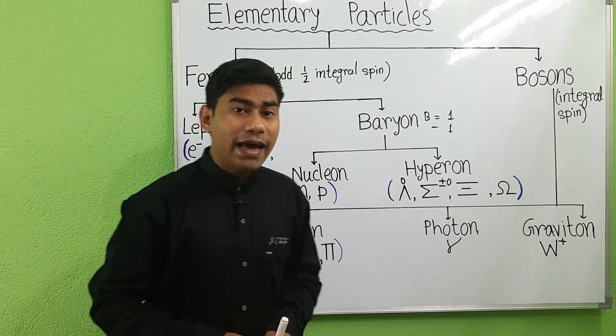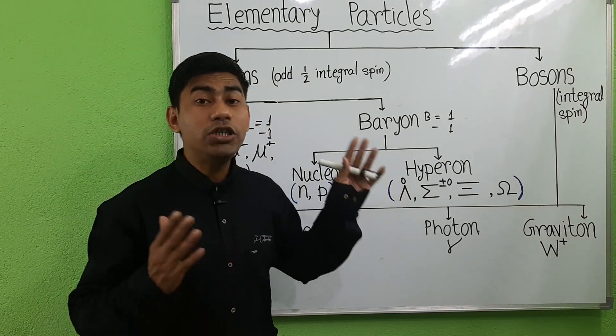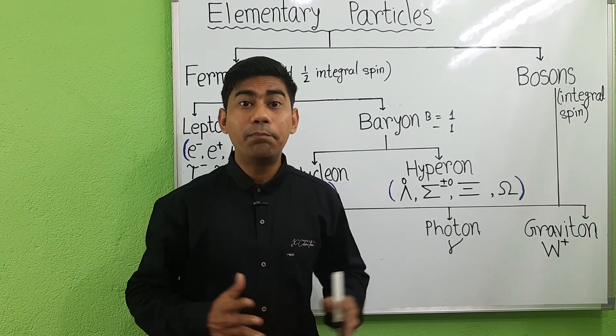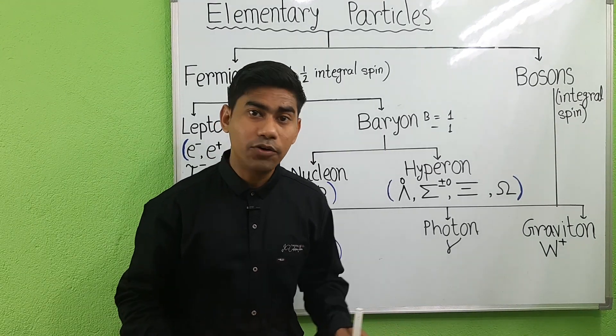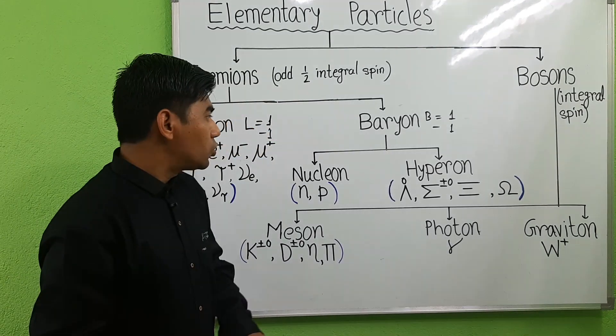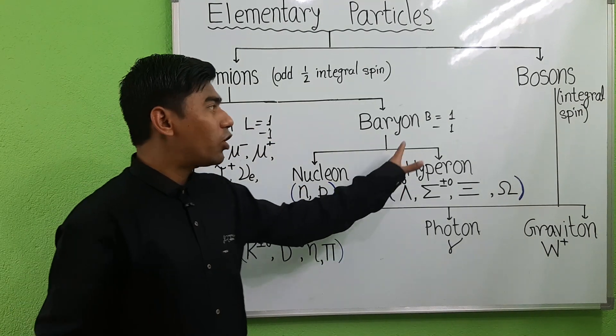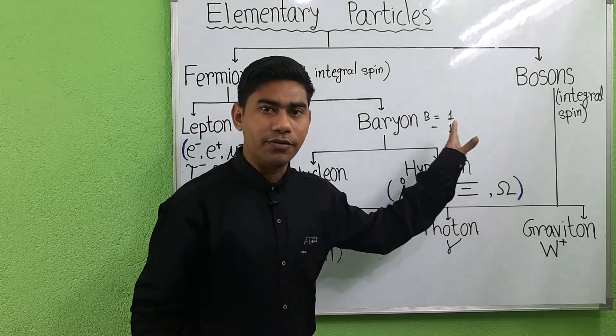B equals to 0 for all other particles. So these are the examples of baryons.